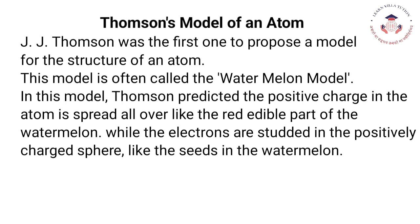Thomson's model of an atom: J.J. Thomson was the first one to propose a model for the structure of an atom. This model is often called the watermelon model. In this model, Thomson predicted the positive charge in the atom is spread all over like the red edible part of the watermelon, while the electrons are studded in the positively charged sphere like the seeds in the watermelon.